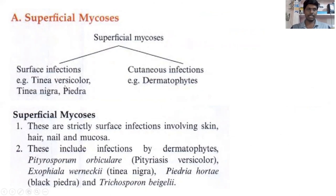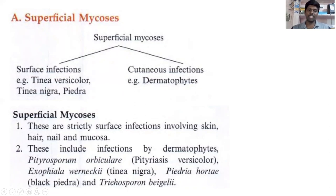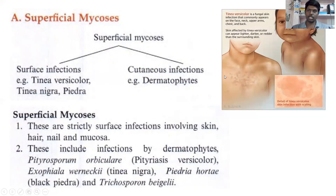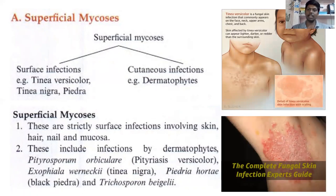The surface infection-causing fungi include tinea versicolor, tinea nigra, and piedra. Cutaneous infections include dermatophytes, which affect the skin, hair, nail, and mucosa. Specific examples include Pityriasis orbiculare, Exophiala werneckii, piedra, Hortaea, and Trichosporon. Surface infections affect only the surface layer, while cutaneous infections go just below the skin causing inflammation and patchy discoloration.